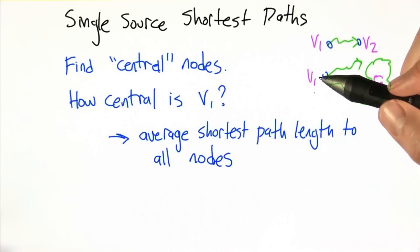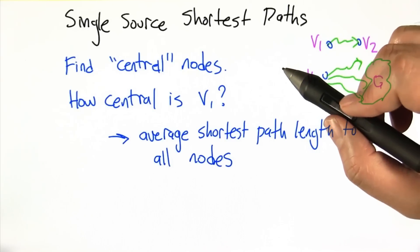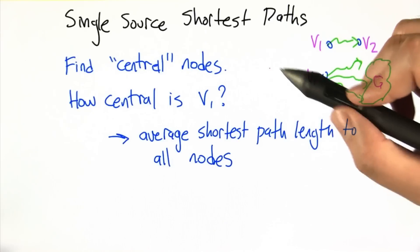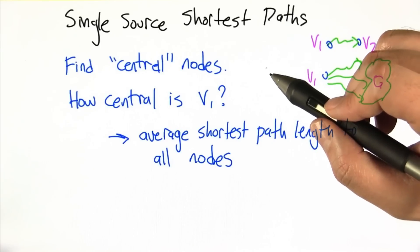And one of the reasons we want to do that is to identify central nodes in a social network—nodes that are likely to have a lot of influence, are well placed, are very well connected.